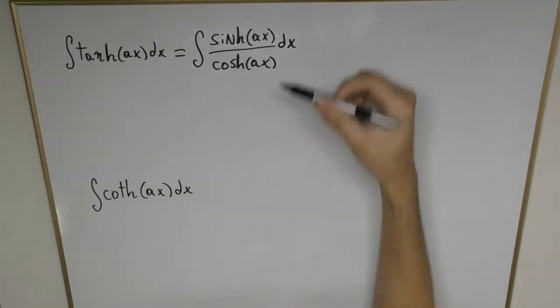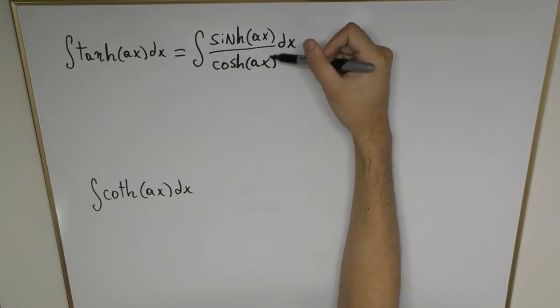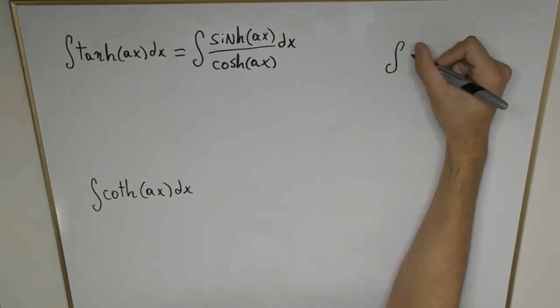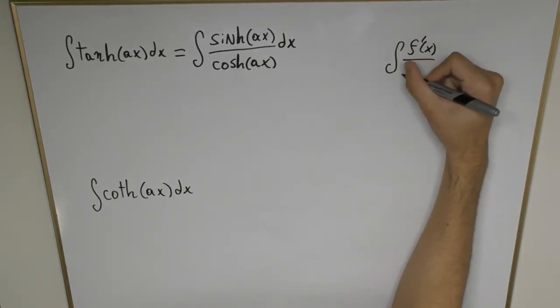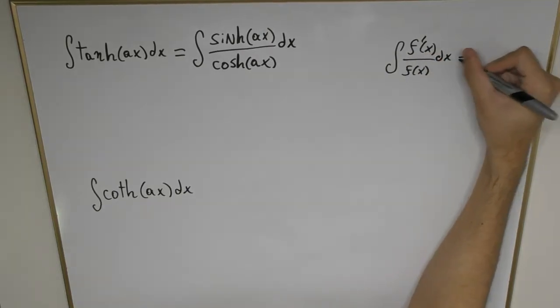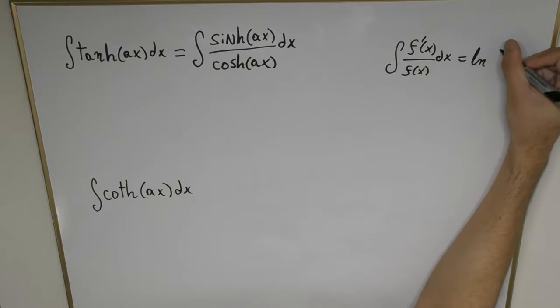As we recall from many videos ago when we did a special kind of integral where the numerator is the derivative of the denominator, we know that the result for this is going to be a natural log of the function f(x) plus some constant C.